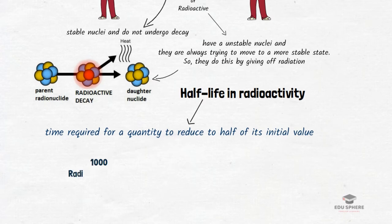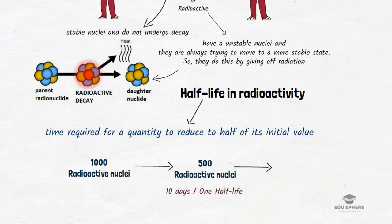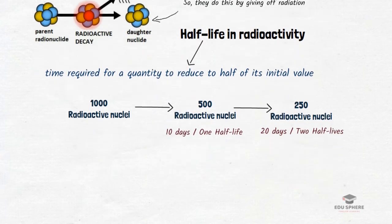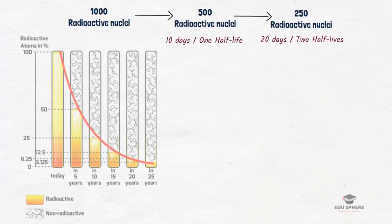For example, if you start off with 1000 radioactive nuclei with a half-life of 10 days. After 10 days, you would have 500 left that is half of 1000. In the following 10 days, this 500 becomes 250. So in two half-lives that is 20 days, 1000 becomes 250 and this continues. As you can see in this chart, we have a radioactive substance with a half-life of 5 years.